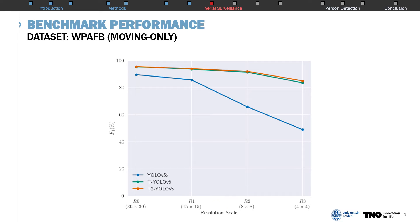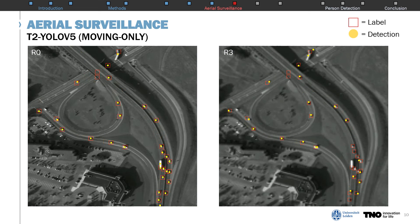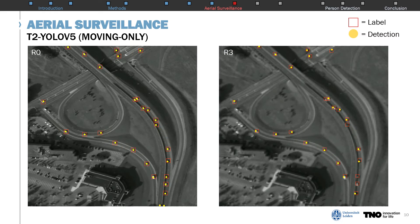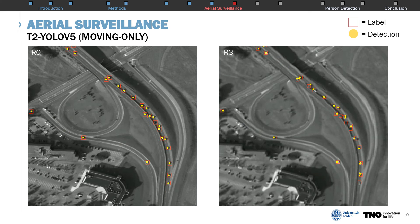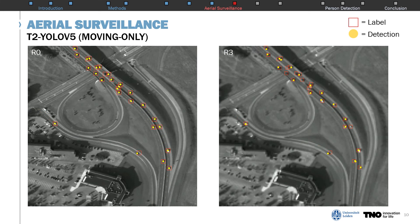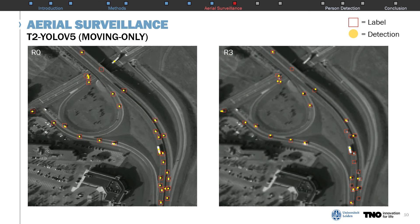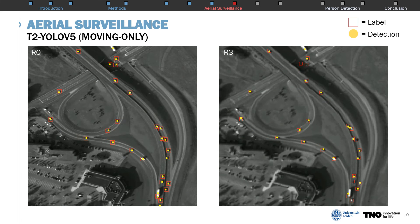Next, we investigate the performance of our approach for the various resolution scales available for this dataset. In this figure, you can see the F1 score of our approaches on the R0 to R3 resolution scales. We see that the addition of temporal context significantly improves the detection of moving objects, even when resolution is lowered. Both our approaches perform well, even when tasked with detecting moving objects of only 4 by 4 pixels in size. Here we show some qualitative results of our best-performing model on the R0 and R3 resolution scales. In these videos, ground-truth labels are visualized as red boxes and model detections as yellow dots. These models have been trained to only detect moving objects, causing parked or stationary cars to be ignored. We see that our model is able to accurately detect moving objects even when their resolutions are very low, as shown in the right video.